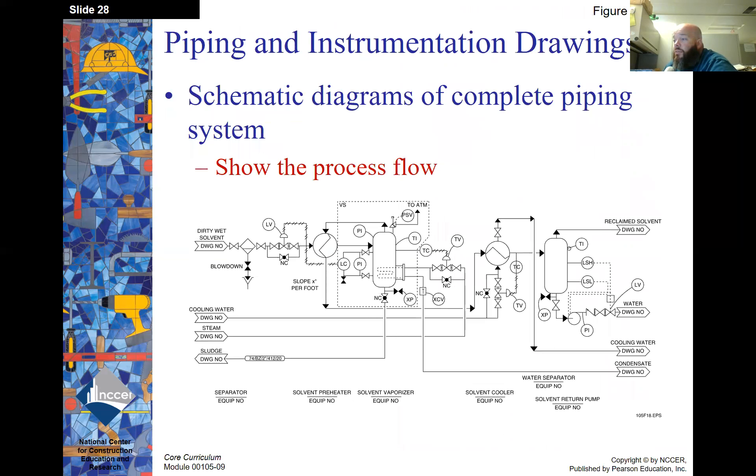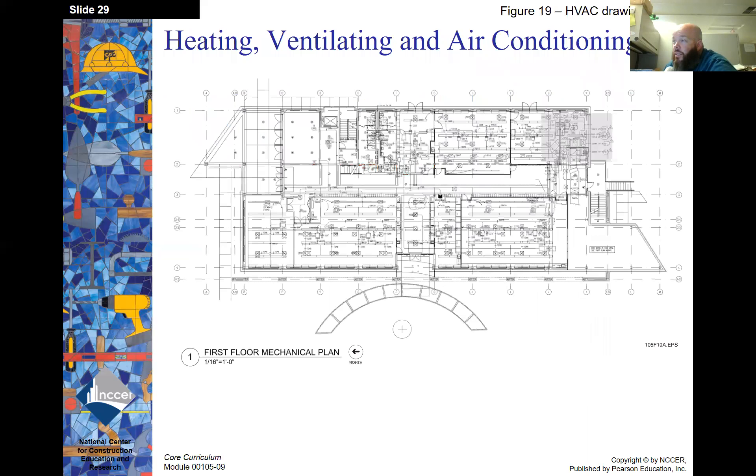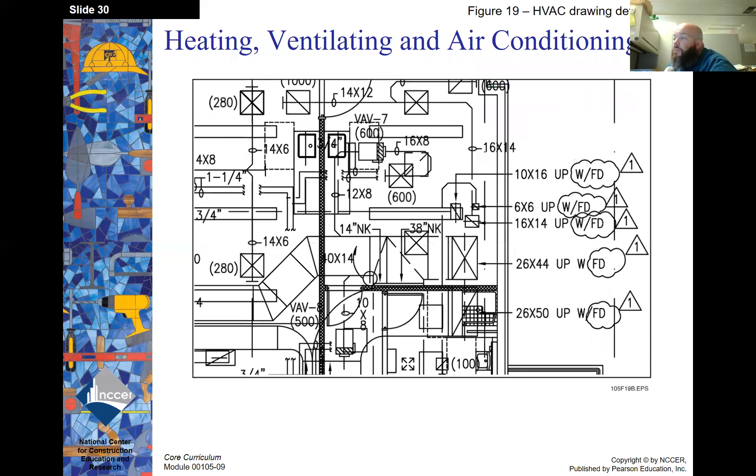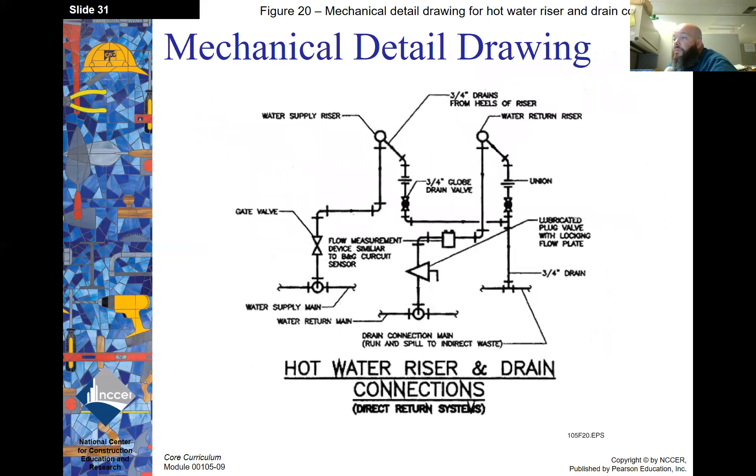Heating, ventilation, and air conditioning. So the HVAC plan is going to tell you where all the different cooling units are, where the ducting is to be run, where the registers and grills are to be placed. Here's another more detailed drawing, kind of zoomed in of an HVAC plan. Mechanical detail drawing. Again, detailed drawings are going to zoom in on a certain process in the system or a certain part of the drawing so that it can be drawn in more detail.